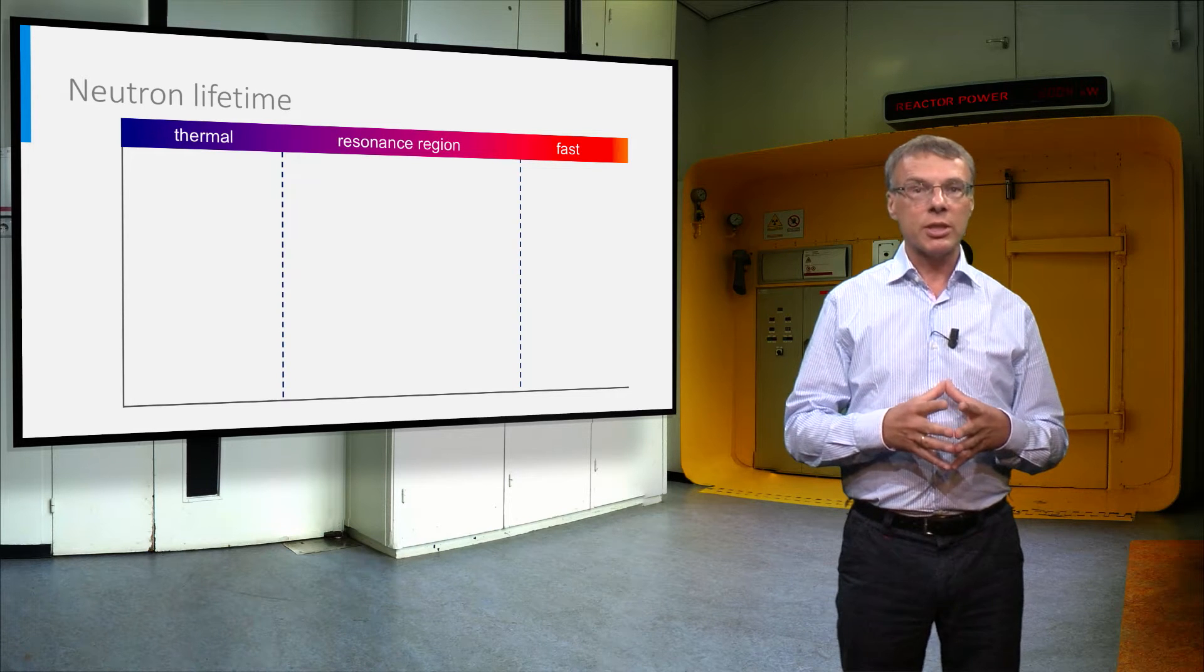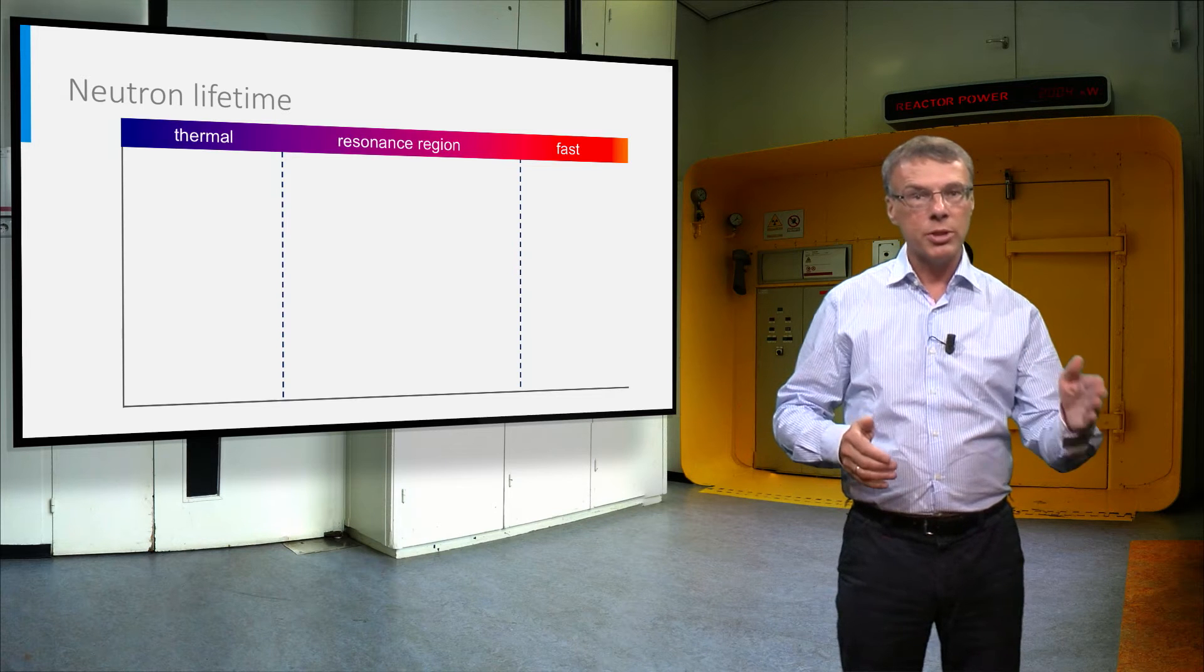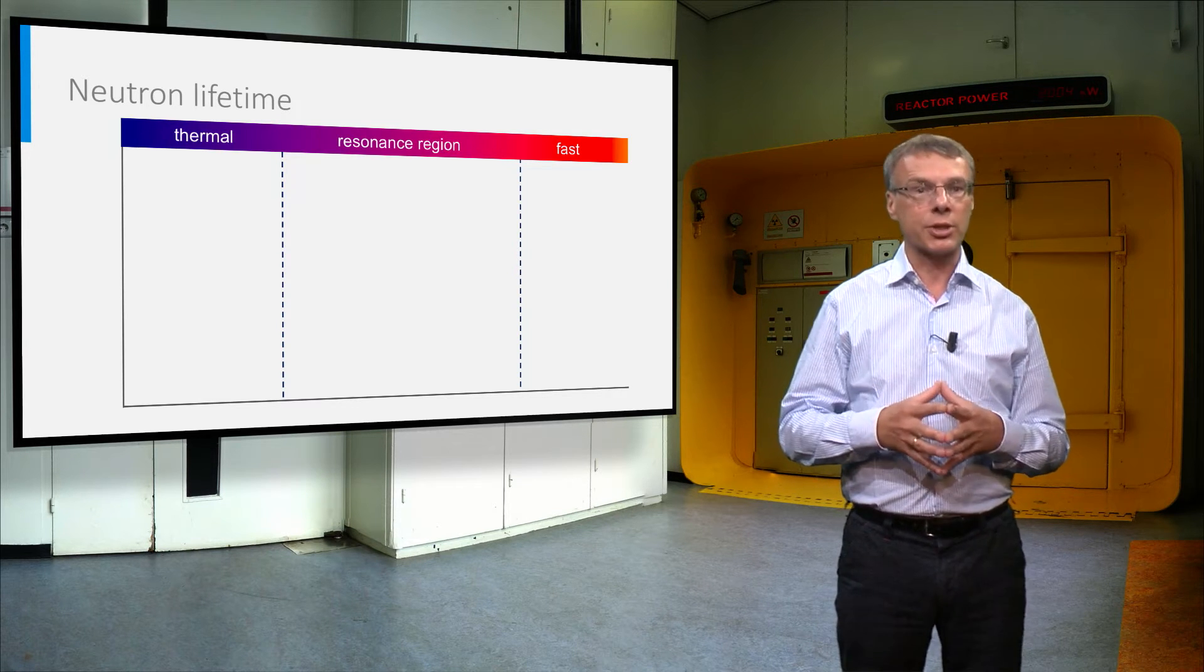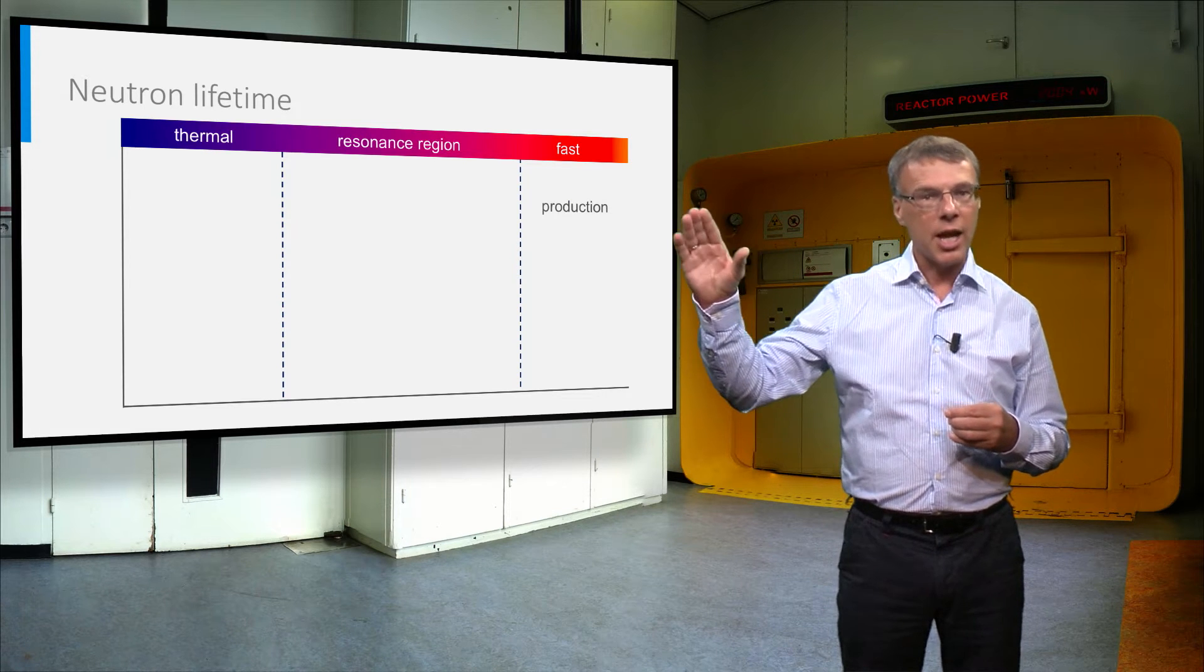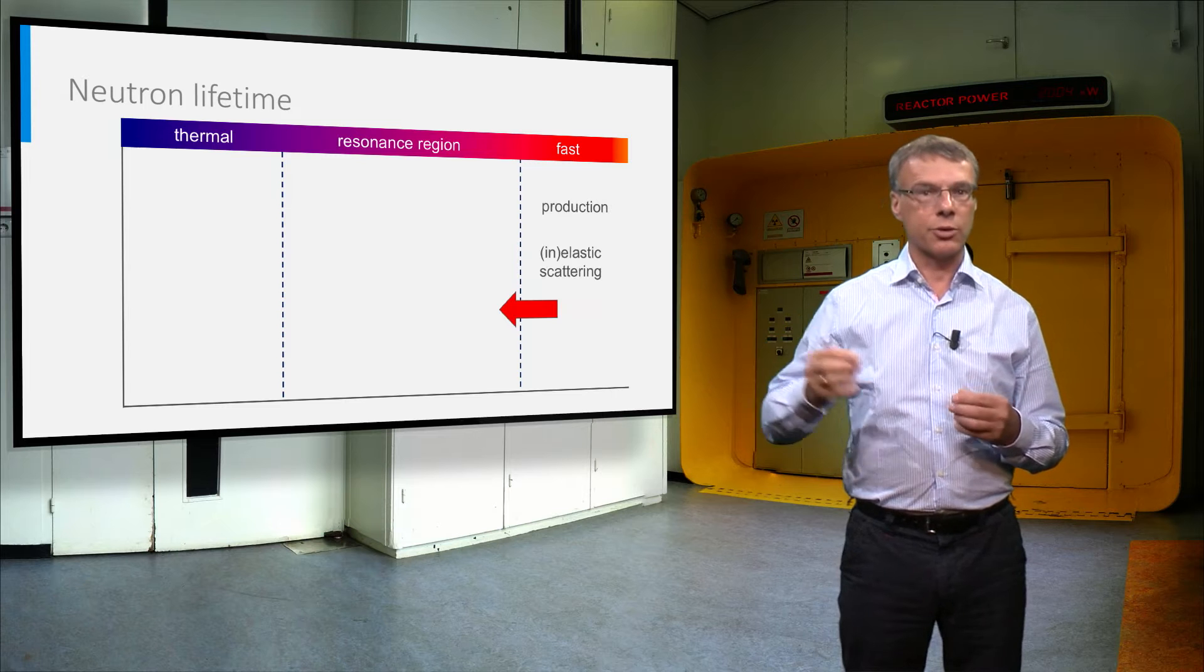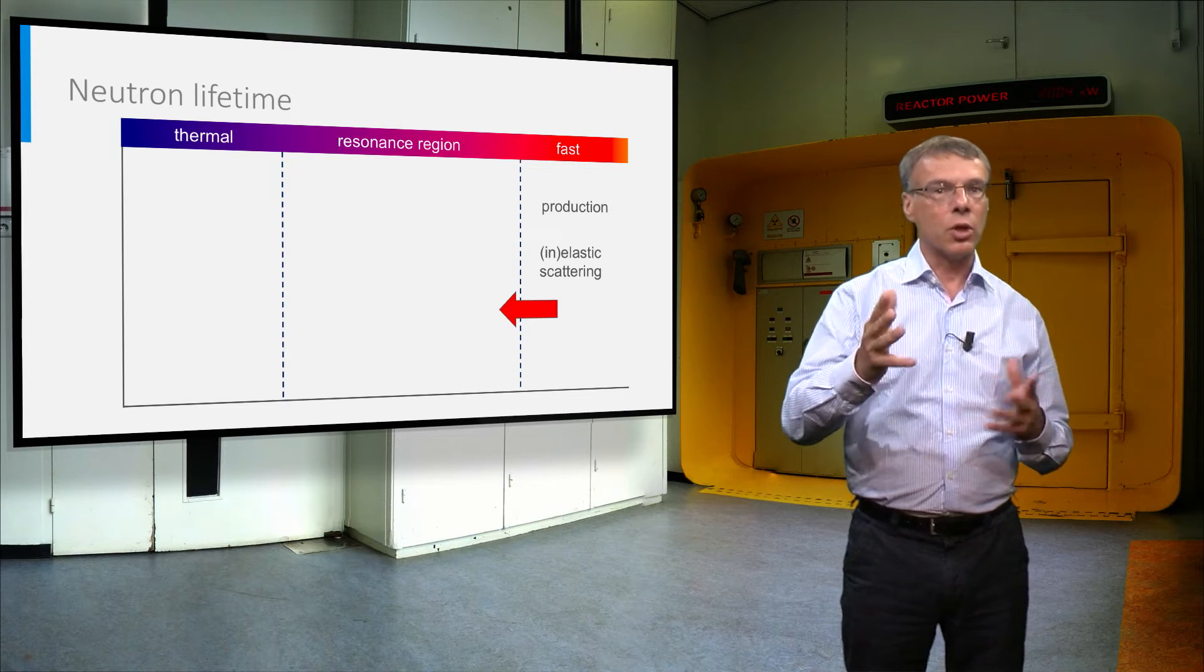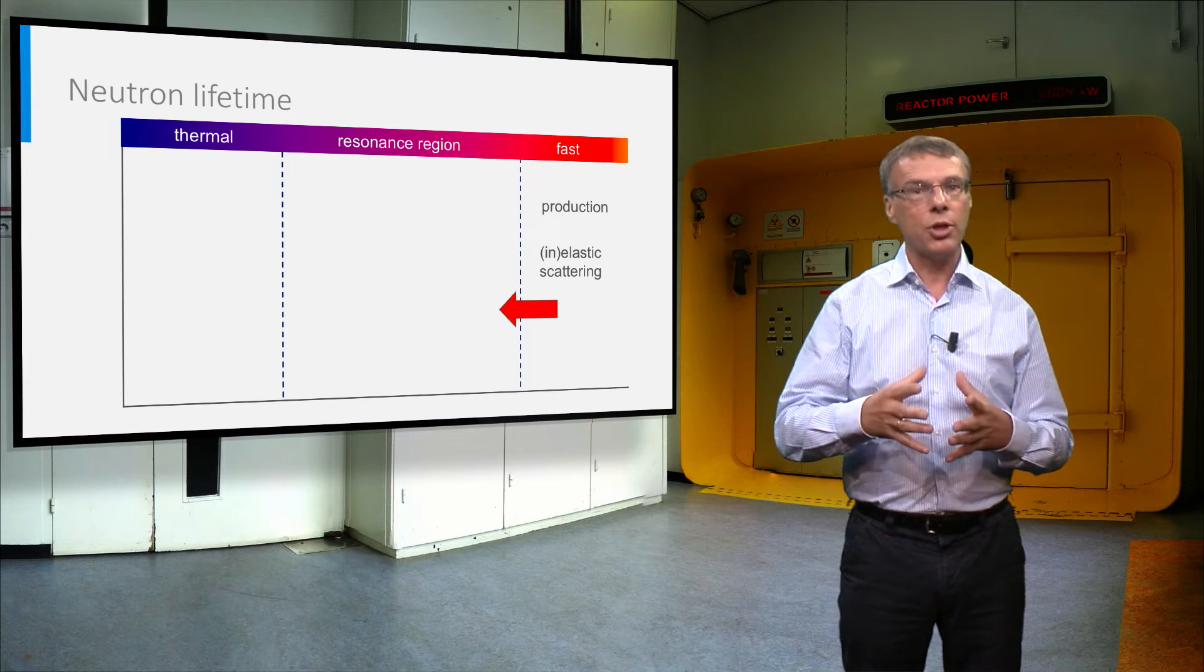This plot shows the processes of a neutron between its release as a free neutron and the moment it is absorbed in the reactor core or leaks away out of the reactor core. A fission neutron is released at very high energy of about 2 MeV, and by elastic and inelastic collisions it will lose energy and reach the resonance range of uranium-238.